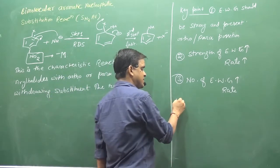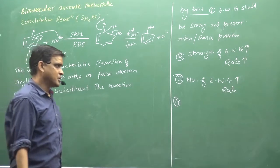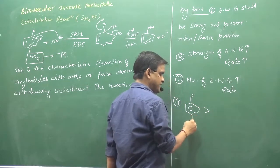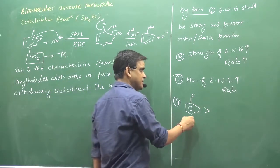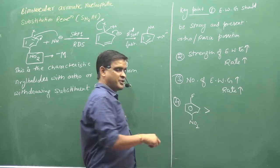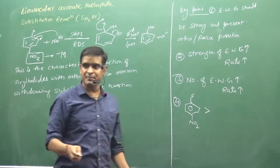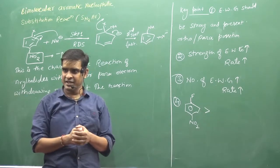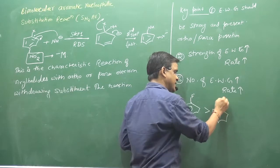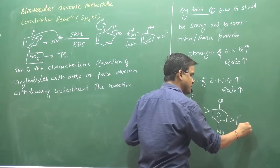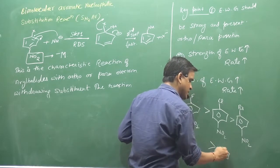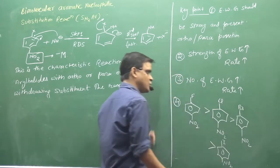Next, if we talk about the leaving group - a good leaving group is generally better. The order of reactivity for leaving groups is: Fluorine > Chlorine > Bromine > Iodine. So the tendency of nucleophile attack will be higher with fluorine. This reaction will be higher as compared to chlorine, chlorine higher than bromine, and bromine higher than iodine. These are small things that you have to keep in mind.